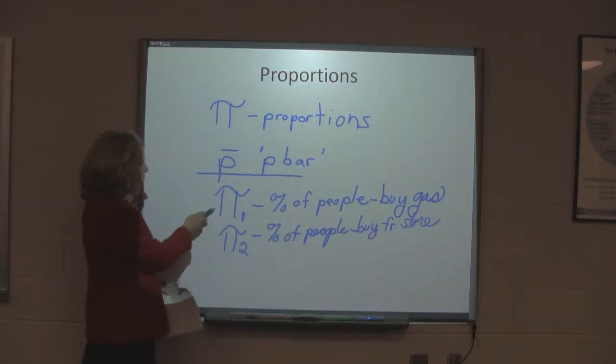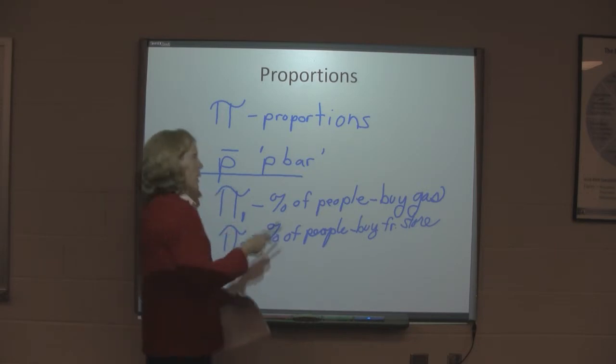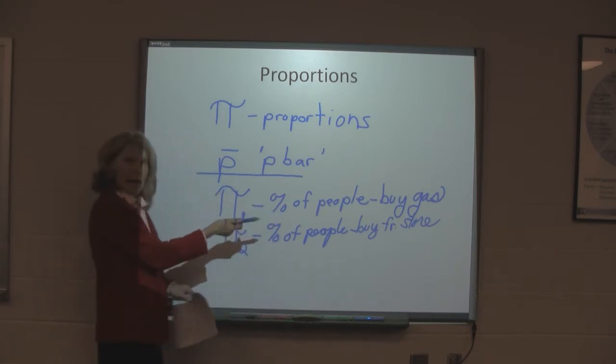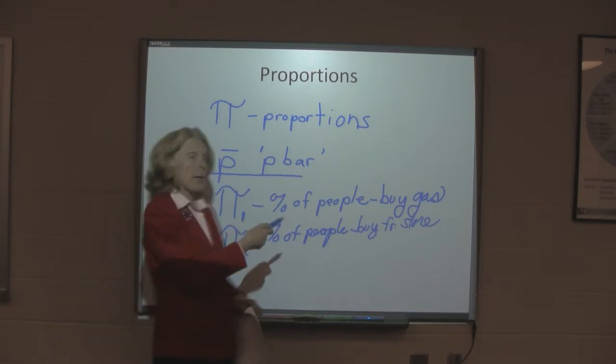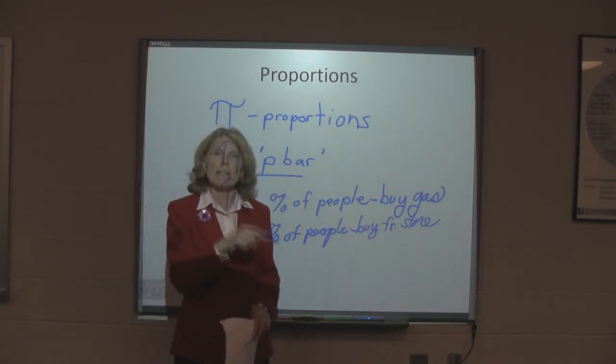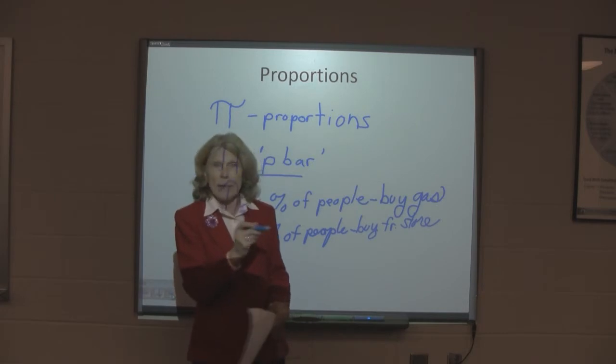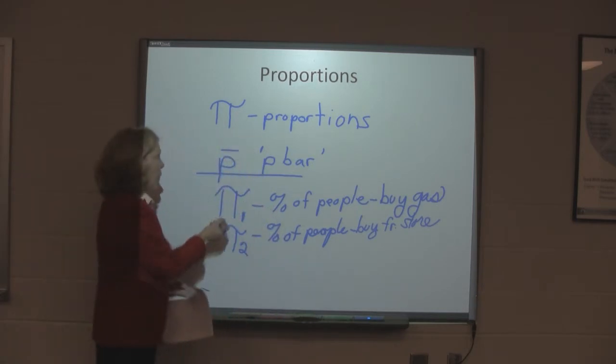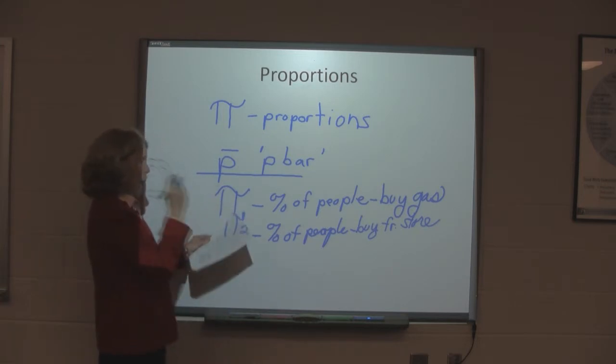So, pi one again might be from the population the percentage of people who buy gas at the gas station. Pi two might be the percentage of people who buy goods from inside the store at the gas station. And we will be comparing in our tests two proportions, just two proportions in this test is what we compare.